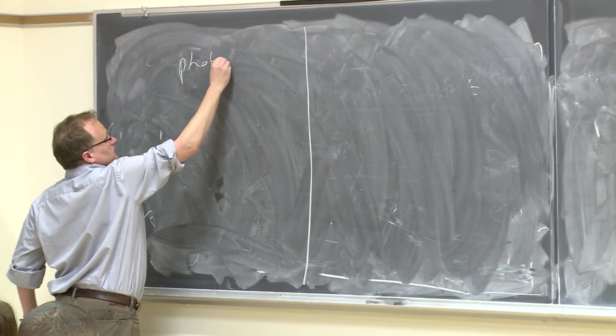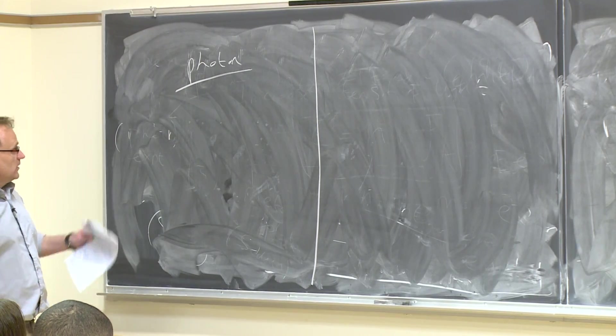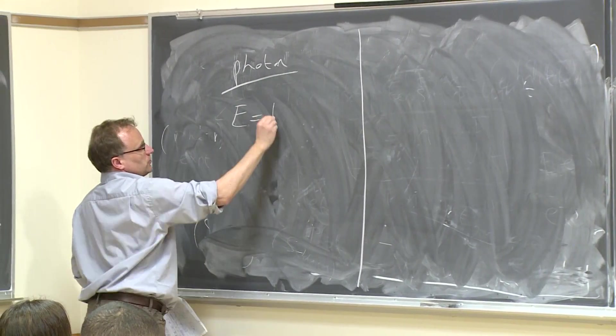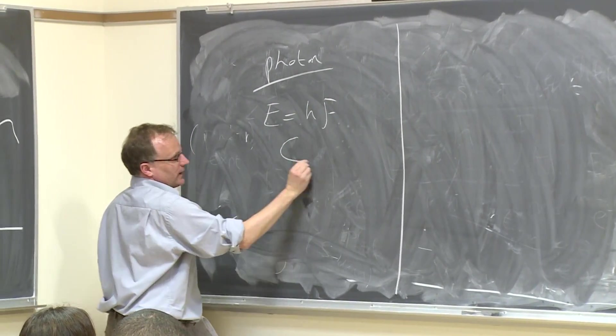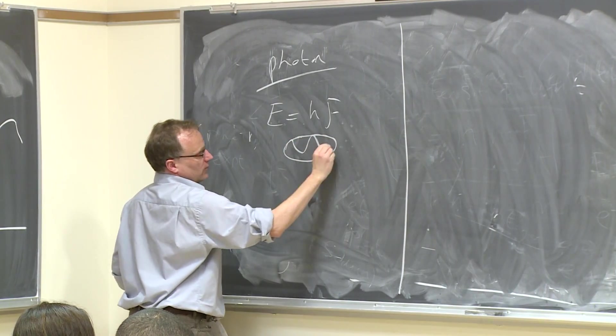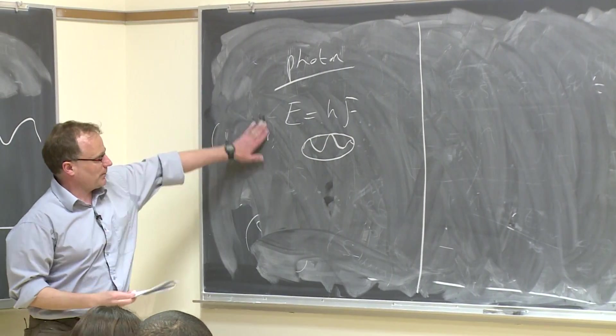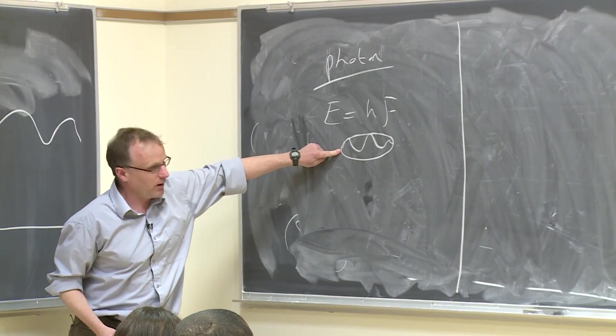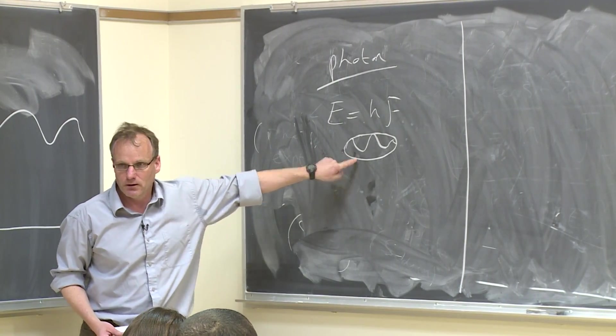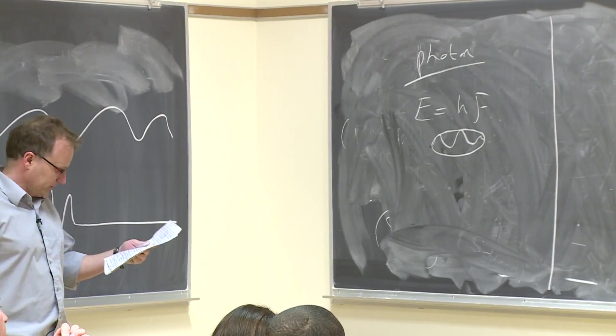So, photon - it has an energy equal to HF. We represent it by maybe something like this. Schematically, we often represent it with something that looks like a particle, but with a little wavy thing in the middle. So it has both properties.